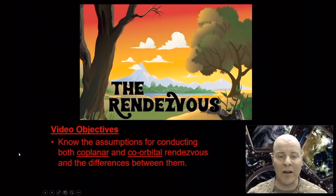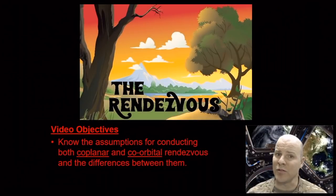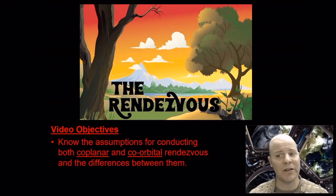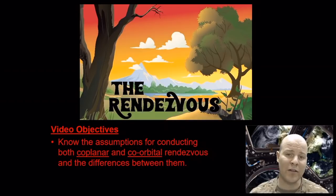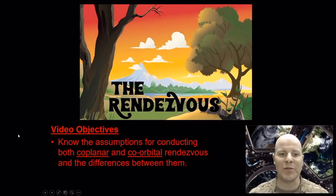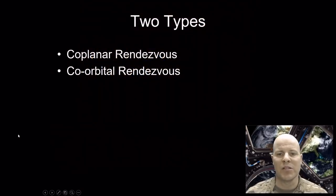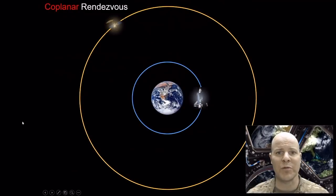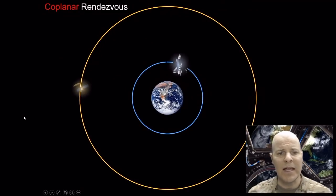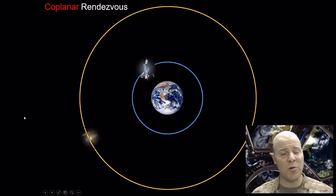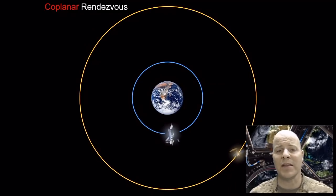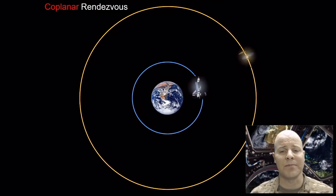Today's video is all about orbital rendezvous, wherein two spacecraft come together. Our objective is to know the assumptions for conducting both a coplanar and co-orbital rendezvous and to be able to differentiate between the two. We'll talk about each in more detail, but we'll start with coplanar rendezvous. A coplanar rendezvous involves two orbits that are in-plane with one another — typically that means they have the same inclination.